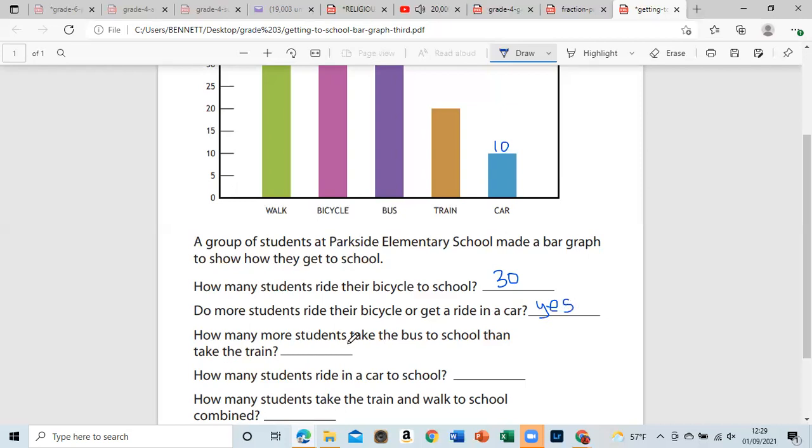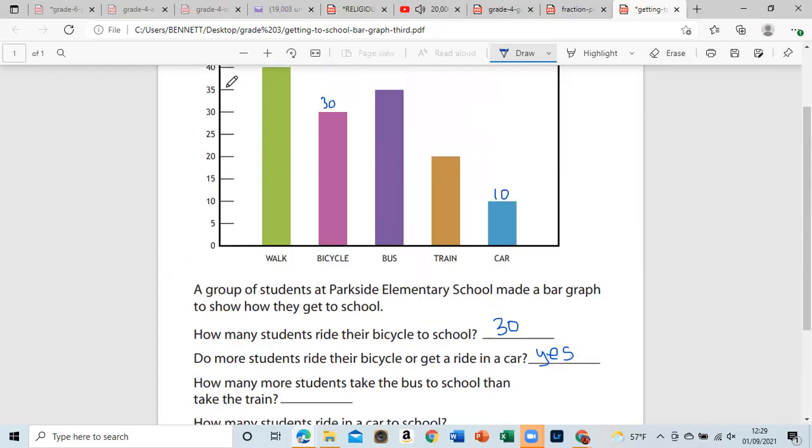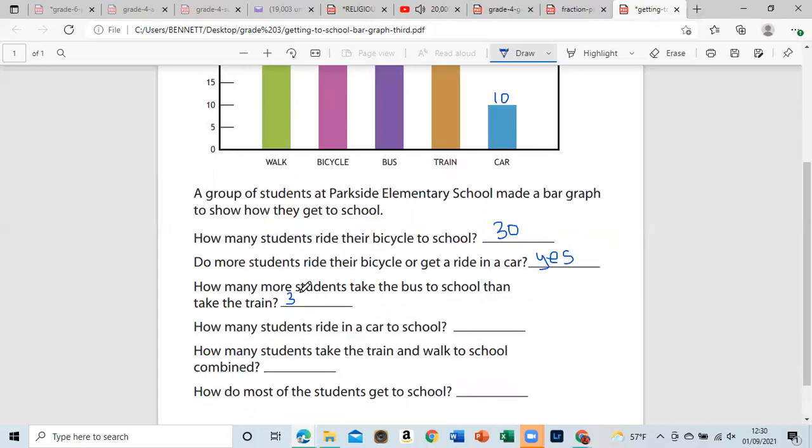How many more students take the bus to school than take the train? They ask for the difference. So right here is 35. 35 take the bus, let's see how many take the train: 20. So we have to subtract. So it would be 35 minus 20. So that would be 15 more take the bus.